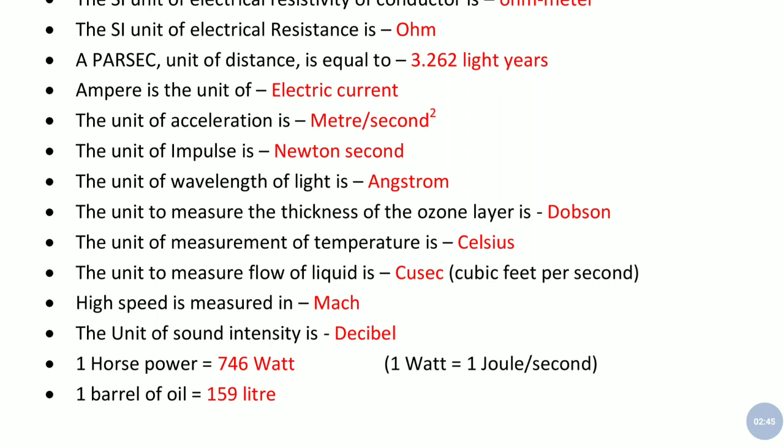Unit of measurement of temperature is Celsius, it can also be Fahrenheit. The unit to measure flow of liquid is cusec, that is cubic feet per second. It can be flow of water, flow of any other liquid. High speeds are measured in Mach.